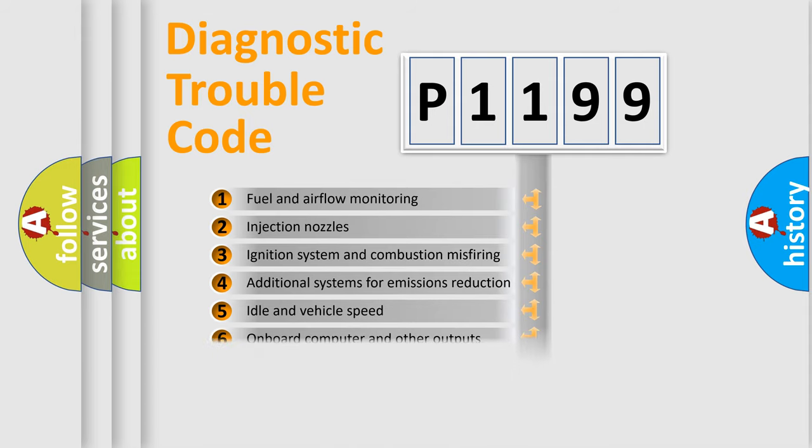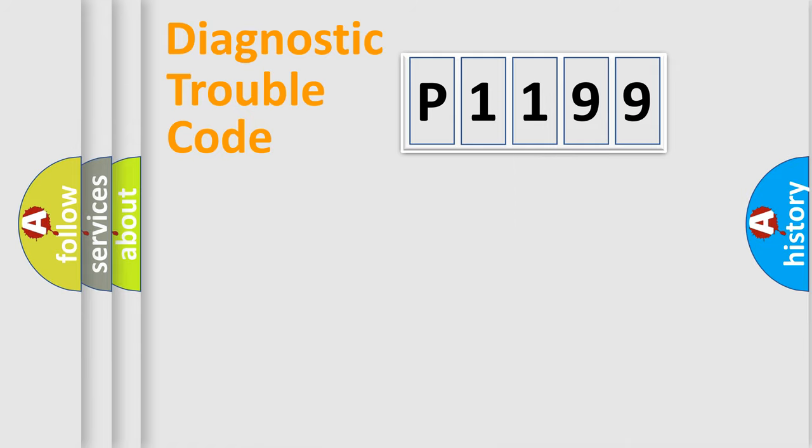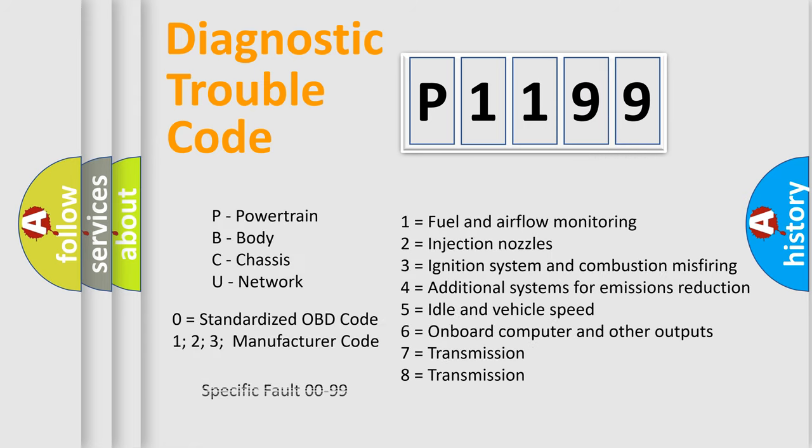The distribution shown is valid only for the standardized DTC code. Only the last two characters define the specific fault of the group. Let's not forget that such a division is valid only if the second character code is expressed by the number zero.